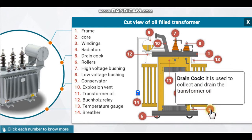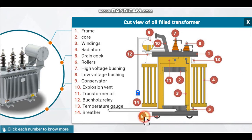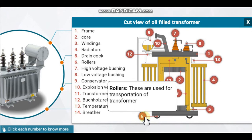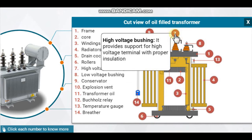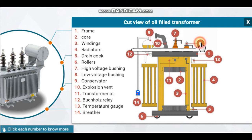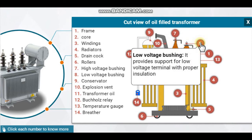Drain cork: it is used to collect and drain the transformer oil. Rollers: these are used for transportation of the transformer. High voltage bushing: it provides support for the high voltage terminal with proper insulation. Low voltage bushing: it provides support for the low voltage terminal with proper insulation.